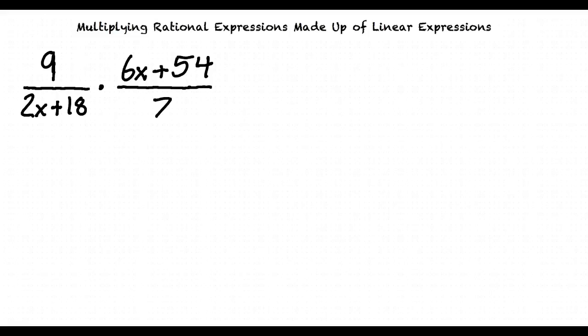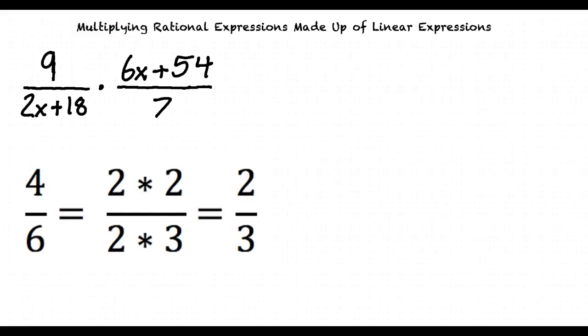When we cancel a factor that is common to the numerator and the denominator we are actually dividing the numerator and the denominator by the same number. Another example of this can be seen by factoring 4 over 6. We know this is the same as 2 times 2 over 2 times 3. We cancel or divide the common factor 2 and our result will be 2 over 3.